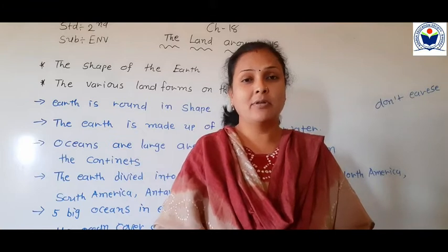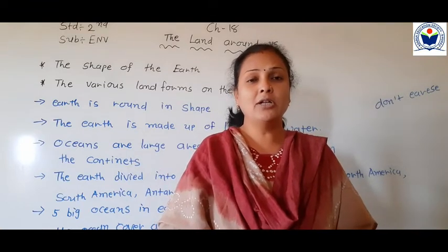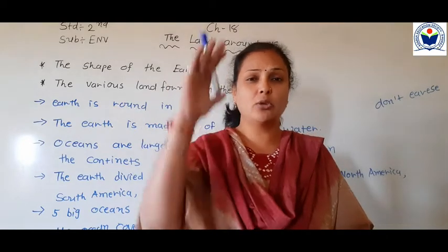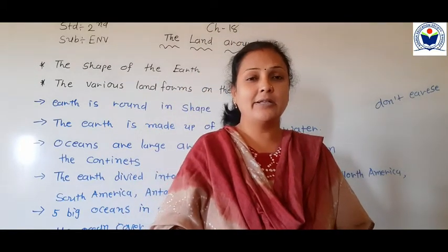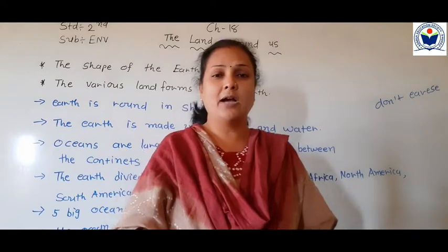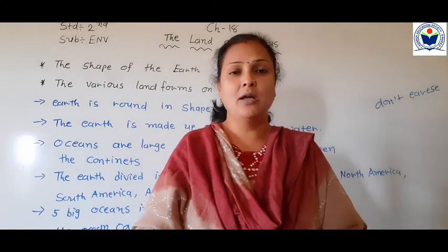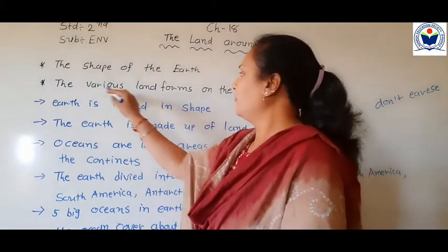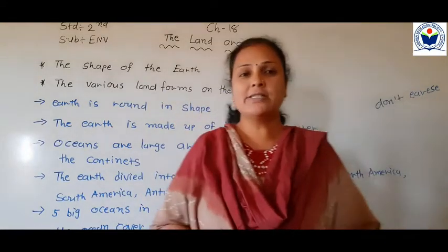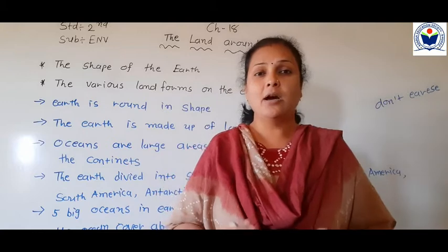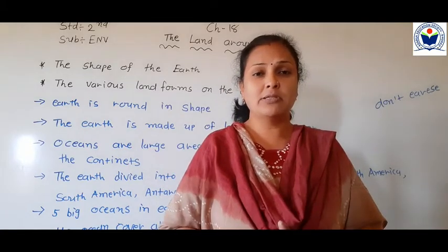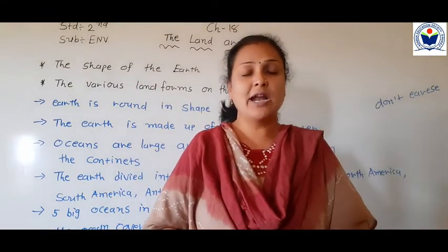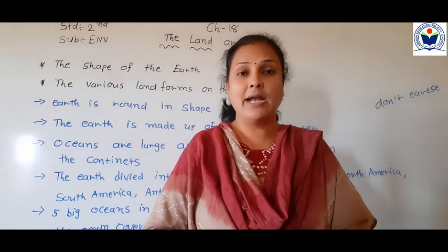We discussed latitudes, longitudes, and triangles. The shape of our land — the earth — is round, but it is not perfectly round. It is slightly like the shape of an egg — round, but not fully round — like the shape of an egg. And in this chapter we will learn about various landforms on the earth.